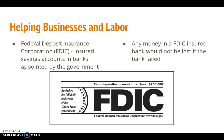Roosevelt called for reform of the nation's financial system. Congress established the Federal Deposit Insurance Corporation (FDIC) to insure bank deposits. The government guaranteed that money placed in an FDIC-insured bank would not be lost if the bank failed. This is still true today — any bank you visit will have an FDIC logo, ensuring each depositor is insured for at least $250,000, so we don't have to go through the banking crises of the 1930s.